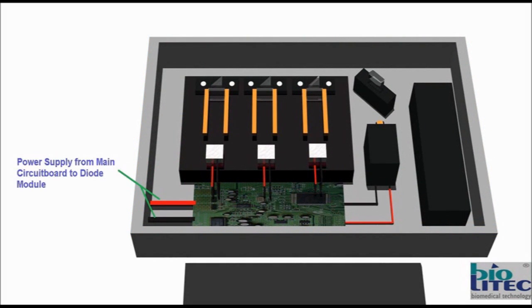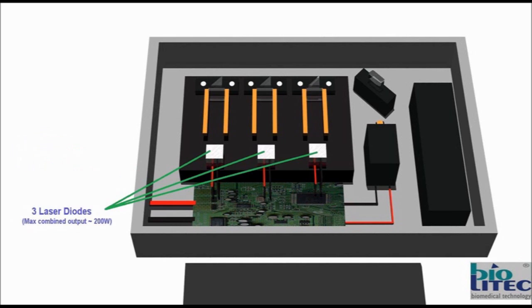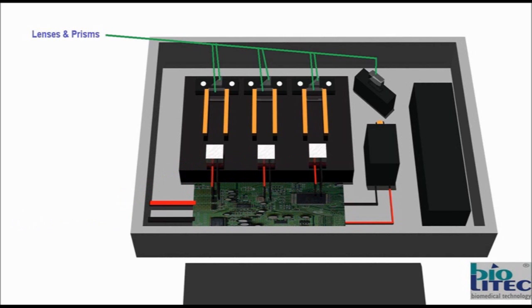Power supply from main circuit board to diode module. Laser diode controlling circuit board. Three laser diodes, maximum combined output 200 watts. Lenses and prisms. Photodiode.